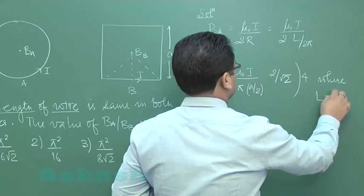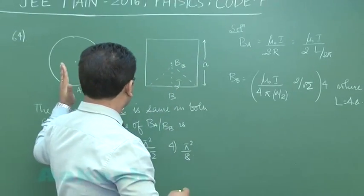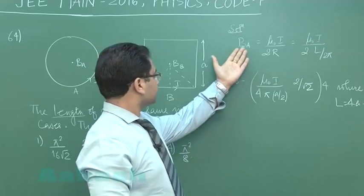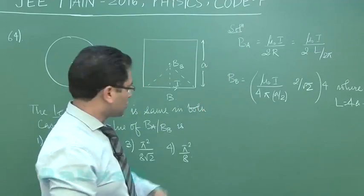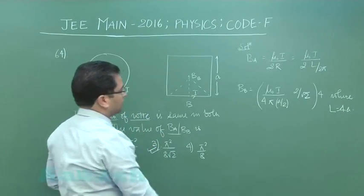L is equal to 4a. L is equal to 4a. L is the total length and that's the same in case A and case B. Now here you get Ba is here, Bb is here. You just need to divide it, and when you solve you get the value of the ratio to be option number 3.